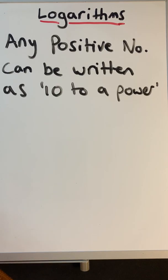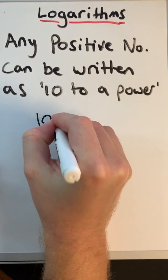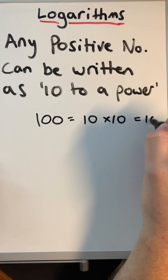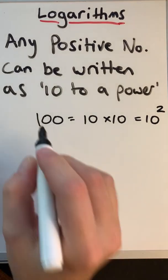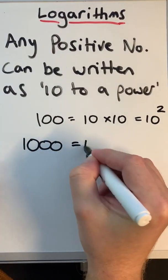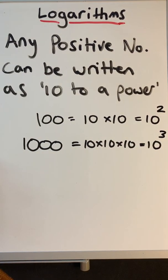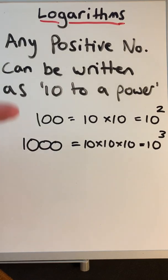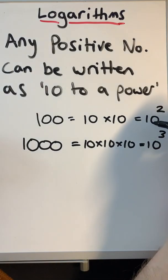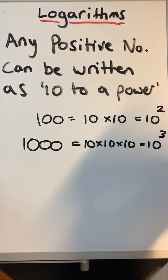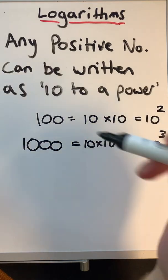The best way to introduce logarithms is that any positive number can be written as 10 to a power. For example, 100 can be written as 10 times 10, which is 10 squared. A thousand is 10 times 10 times 10, written as 10 cubed. Any numbers in between 100 and a thousand would be 10 to the power 2.5 or 2.6, and numbers below 100 would be 10 to the power 1.5 or 1.6.